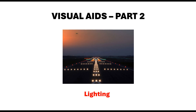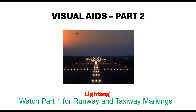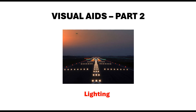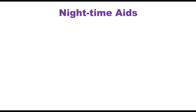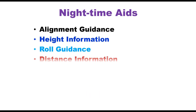In Part 1 of this topic, I explained various types of markings on runways and taxiways. In this part, we shall discuss the nighttime aids provided to the pilot for safe landing during night. A pilot needs many types of information for landing, like alignment guidance, height information, roll guidance, and distance information.